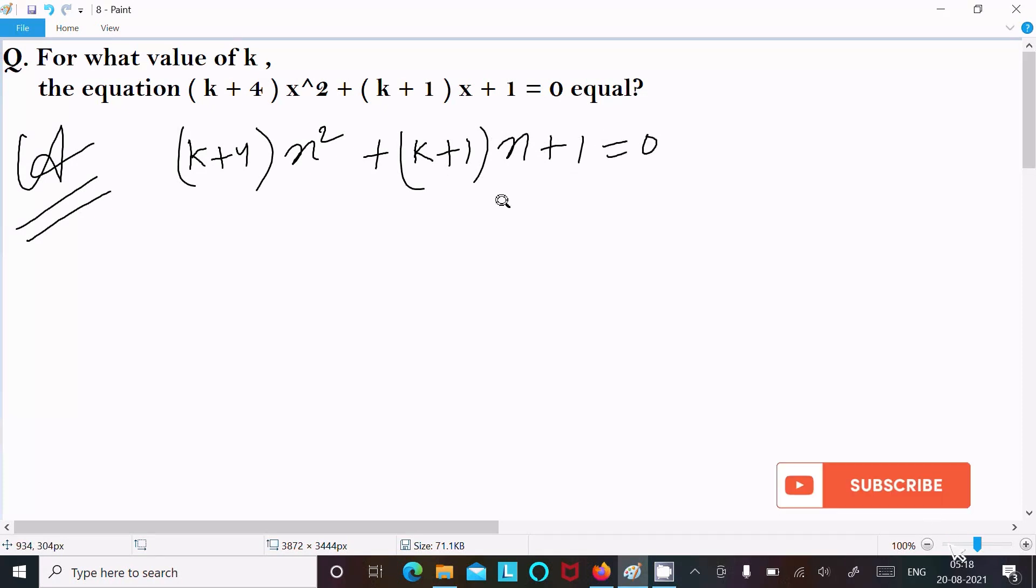I am going to compare this with the general form of a quadratic equation, which is ax² + bx + c = 0. Now here, a = (k+4), b = (k+1), and c = 1.